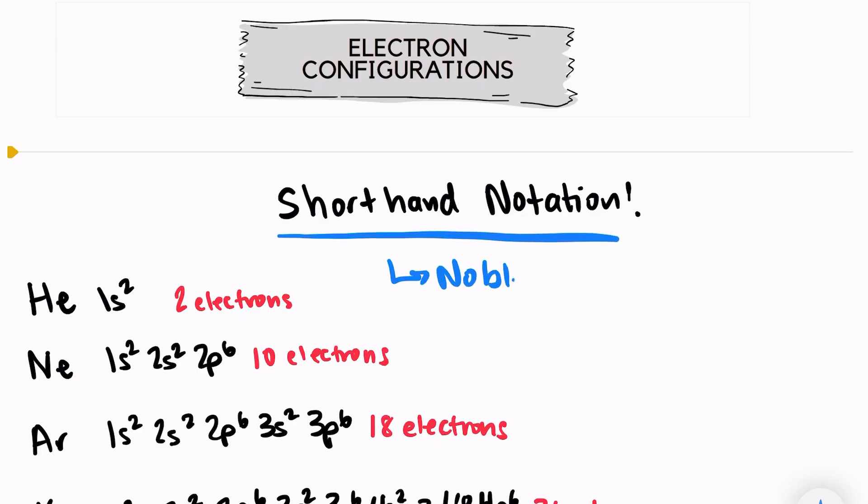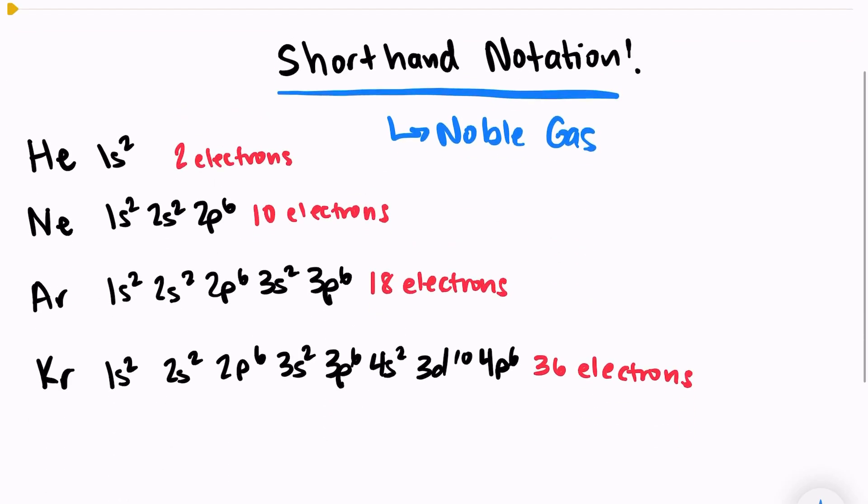And this is also known as the noble gas notation or noble gas configuration. So here's the first four noble gases: helium, neon, argon, and krypton.